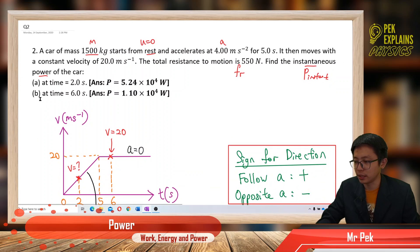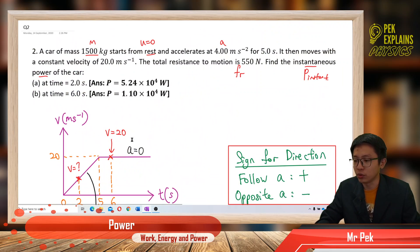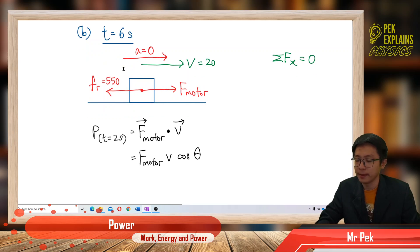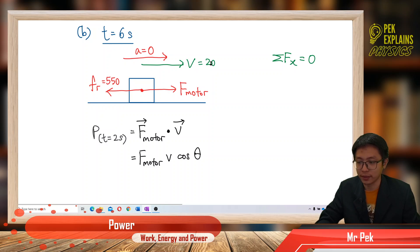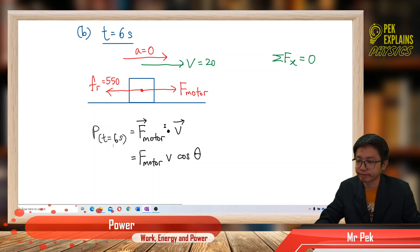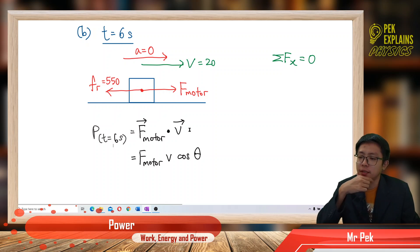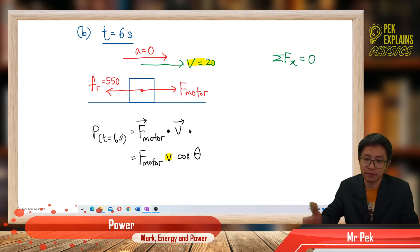Now for part B: instantaneous power at 6 seconds. At 6 seconds, there is no more acceleration — this is important. Acceleration is 0, which means the object is in equilibrium. Velocity we know is 20 meters per second, constant because acceleration is 0. We also use F dot V, and the force is the force of the motor times velocity. Velocity is already 20, but we still need to find the force of the motor.